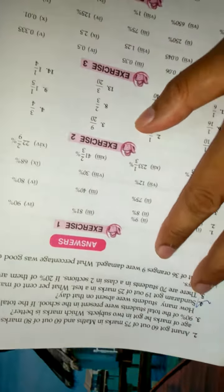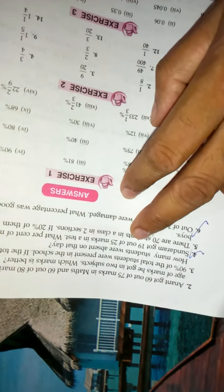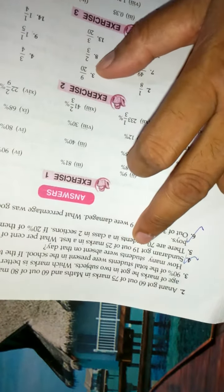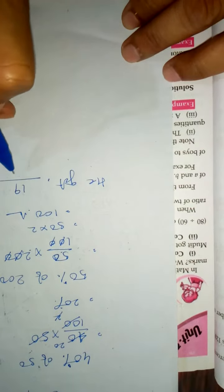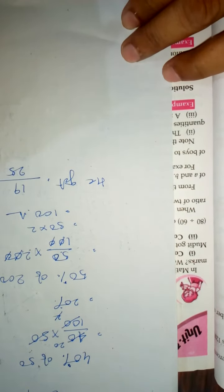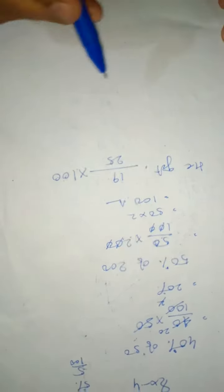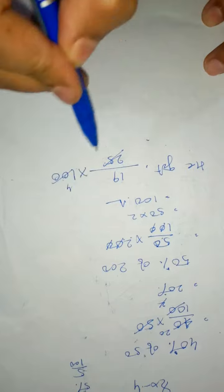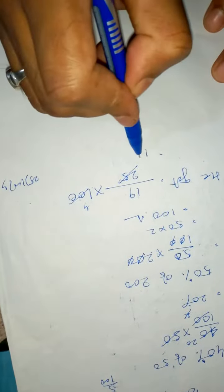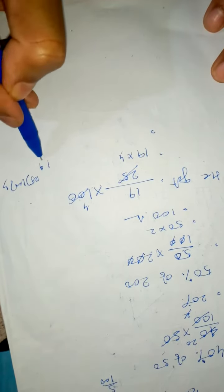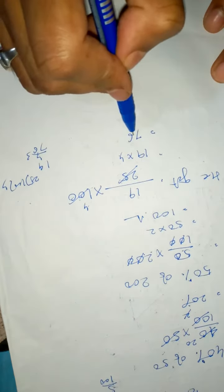Similarly there are word problems. Number 4 says Sundaram got 19 out of 25 marks in a test. What percent marks did he get? The total marks is 25 and he got 19. So write 19 over 25, multiply by 100. Now divide 100 by 25, which is 4. Then multiply 19 by 4, which gives you 76. That is 76 percent.